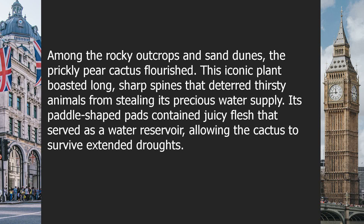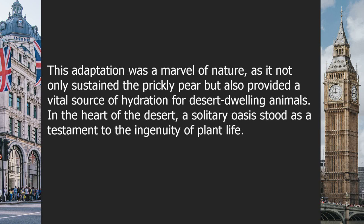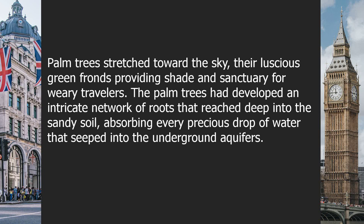Among the rocky outcrops and sand dunes, the prickly pear cactus flourished. This iconic plant boasted long sharp spines that deterred thirsty animals from stealing its precious water supply. Its paddle-shaped pads contained juicy flesh that served as a water reservoir, allowing the cactus to survive extended droughts. In the heart of the desert, a solitary oasis stood as a testament to the ingenuity of plant life. Palm trees stretched toward the sky, their lush green fronds providing shade and sanctuary for weary travelers.